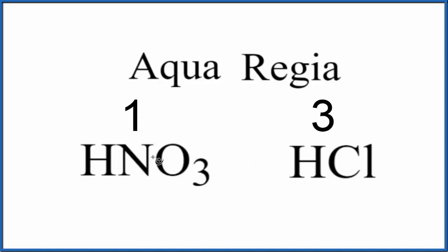You can think of it as one molecule of nitric acid for every three molecules of hydrochloric acid, or one mole of nitric acid for every three moles of hydrochloric acid. The key is that this is the optimal ratio to dissolve things like gold or platinum.